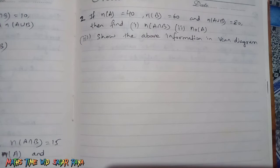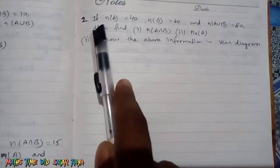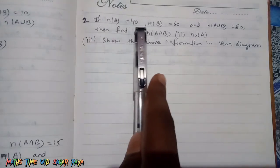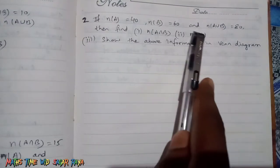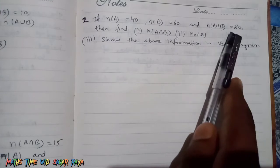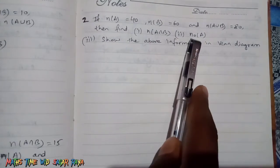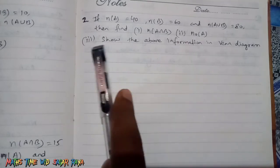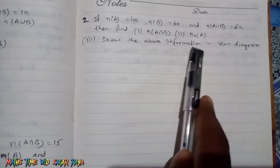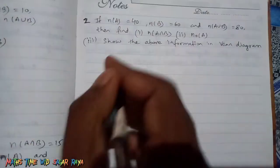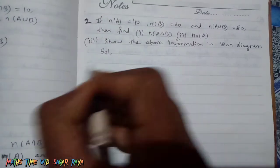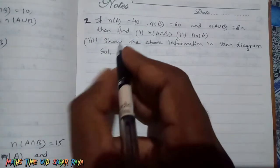Hello friends, welcome to my channel Math Time with Sagar Raya. Today I am back with another question from chapter set. On the screen you can see the question: if n(A) = 40, n(B) = 60, and n(A∪B) = 80, then find n(A∩B), n(only A), and show the above information in a Venn diagram. Let's do this without any delay.